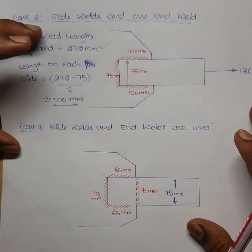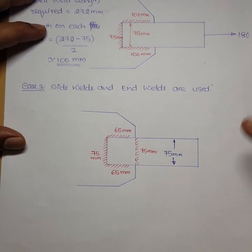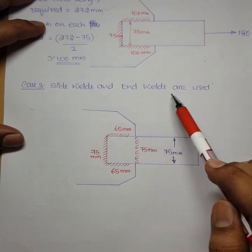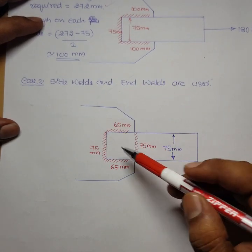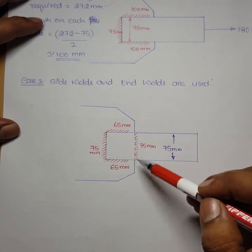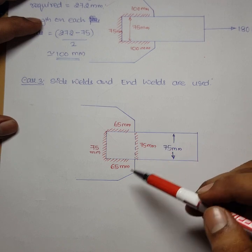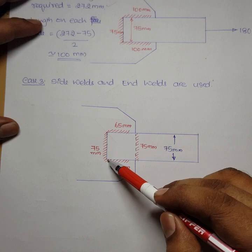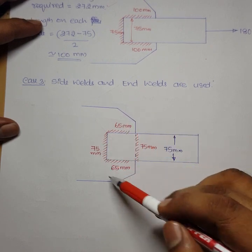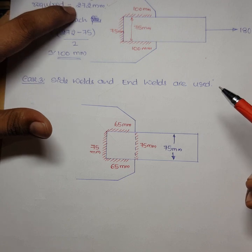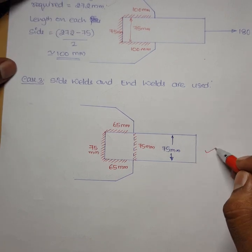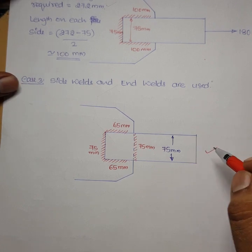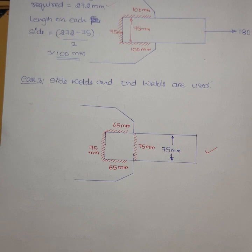Case 3 — side welds and both end welds: both end welds contribute 75 + 75 = 150 mm. Remaining = 272 − 150 = 122 mm, so provide 65 mm on each side (130 mm total). Overall total = 150 + 130 = 280 mm > 272 mm, hence the design is safe. This concludes the design of fillet weld connections.